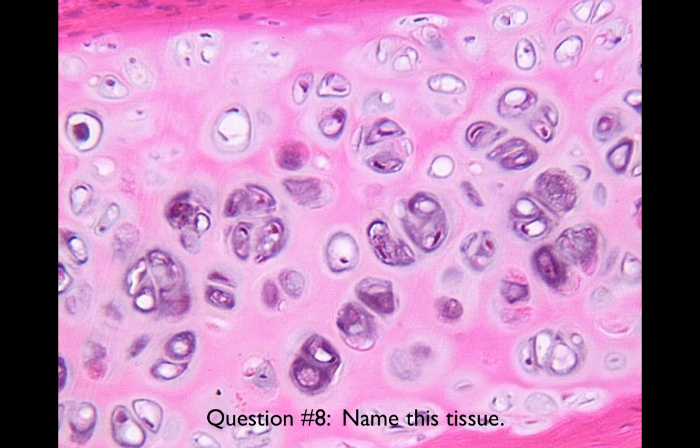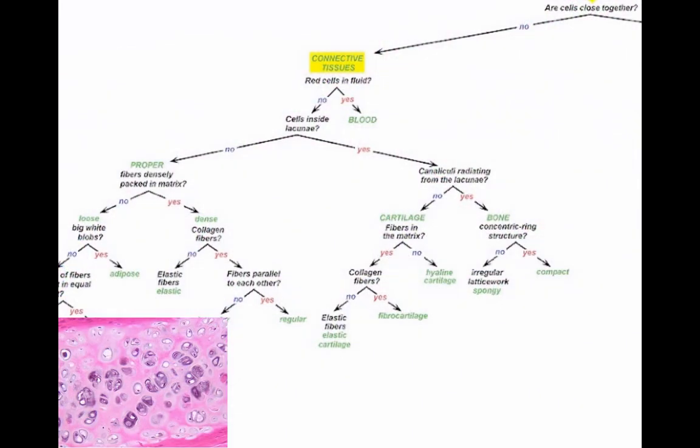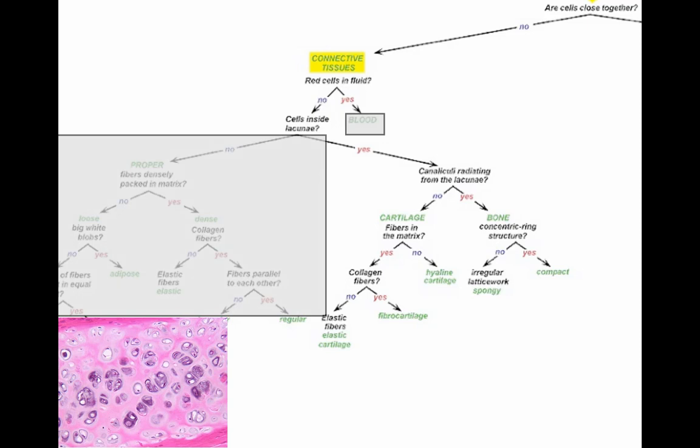All right, we're getting to the end here. Name this tissue. This can be a hard one, but let's go through the tree. The cells are not close together. There is a matrix in between. The cells are not in fluid, but they do sit in lacunae, just like the bone, but this is obviously not bone. But we're still on this side of that little fork here. Do you see canaliculi radiating from the lacunae, like we did in bone? No. We don't see that. So we know we're talking about cartilage. And now we just have to ask the question, do you see fibers in this cartilage or not? And you don't see any fibers. This is hyaline cartilage. This is a type of tissue that's very strong, but also flexible.